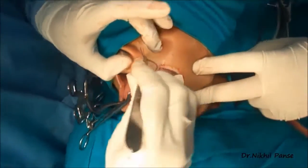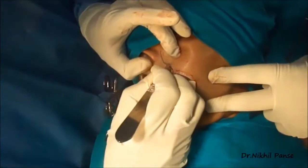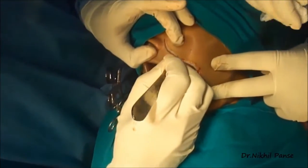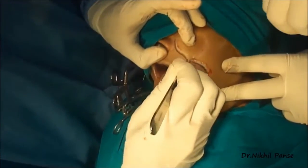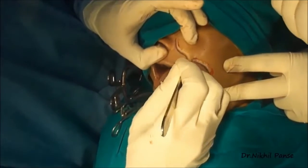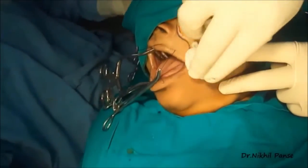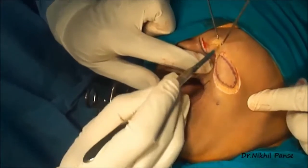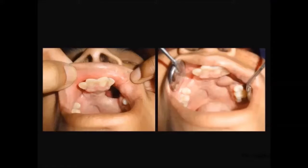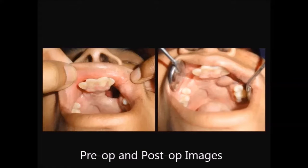Now this is the flap being harvested. Since this flap is to be used for intraoral reconstruction, it is islanded and based on a circuit, and then it is sutured. This is pre-op and post-op images of a well-set result.